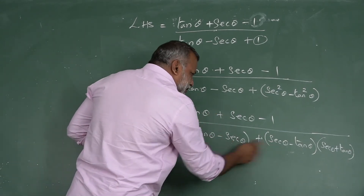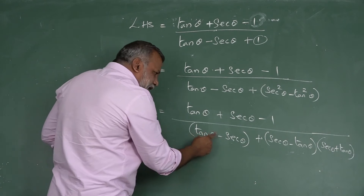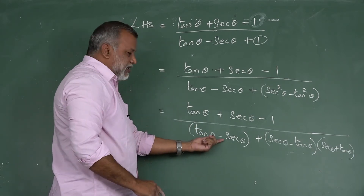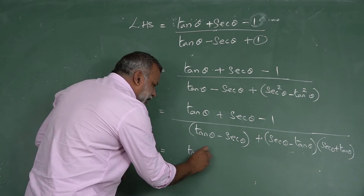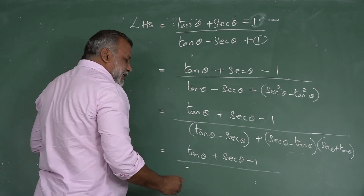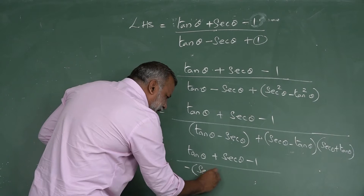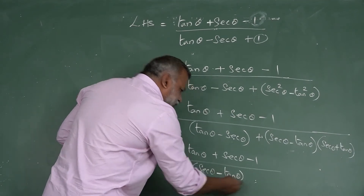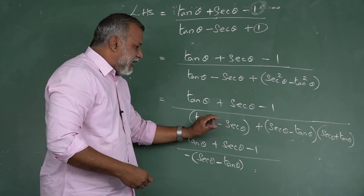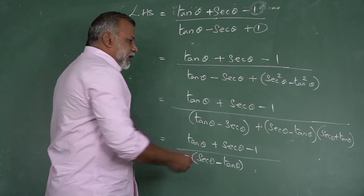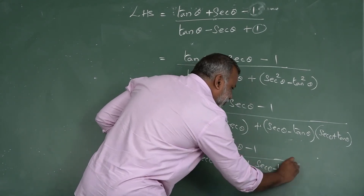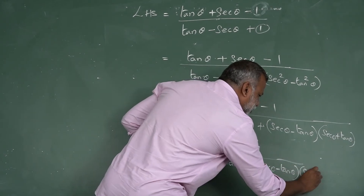In the numerator we have tan θ - sec θ, but in the denominator factor we have sec θ - tan θ. To make them match, we take out a negative from the numerator factor, so tan θ - sec θ = -(sec θ - tan θ). The remaining factor as usual is (sec θ - tan θ)(sec θ + tan θ).